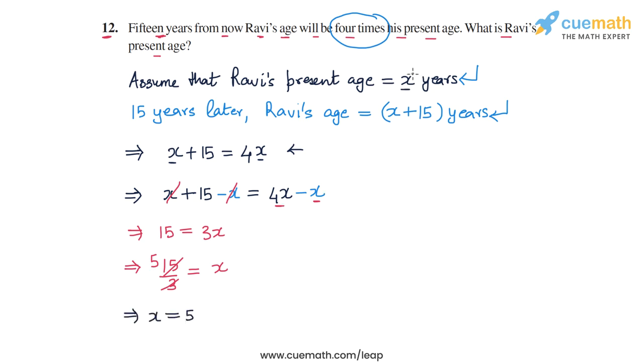This means that Ravi's present age which we assumed as x years, so his present age is 5 years. And we can verify that this answer is correct.